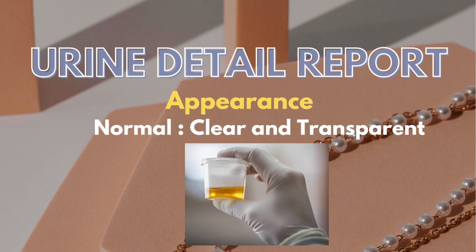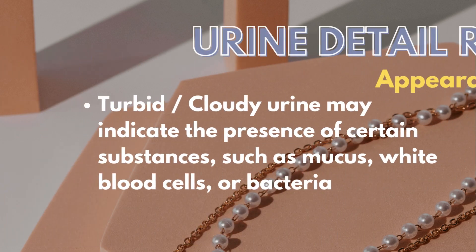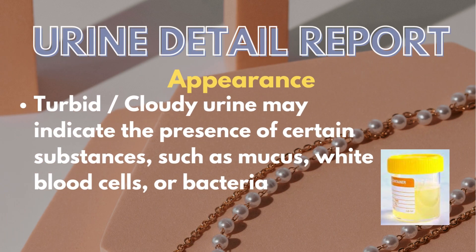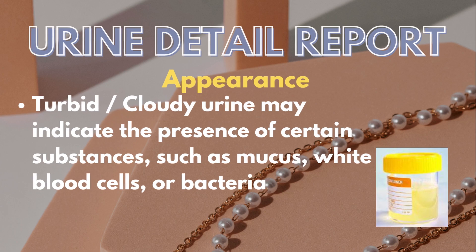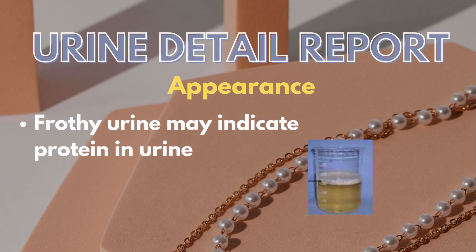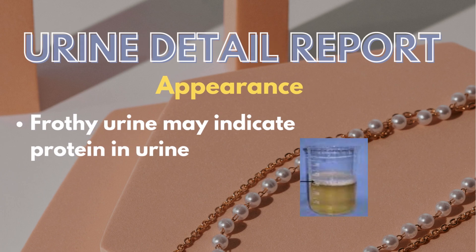The appearance of normal urine is clear or transparent. But if it is turbid or cloudy in appearance, it may indicate the presence of certain substances such as mucus, white blood cells, or bacteria. If the urine is frothy, it may indicate protein in urine.